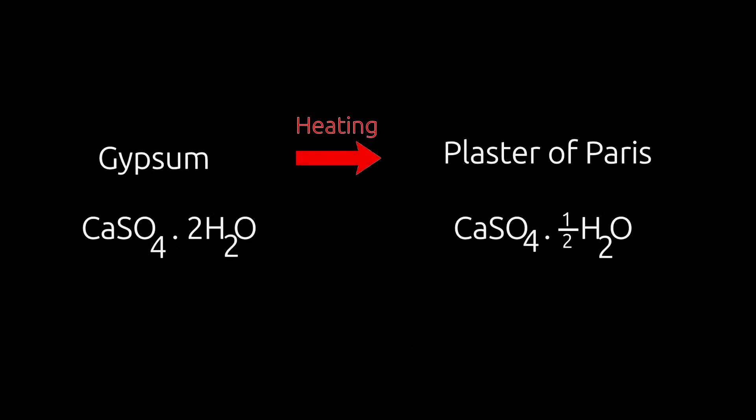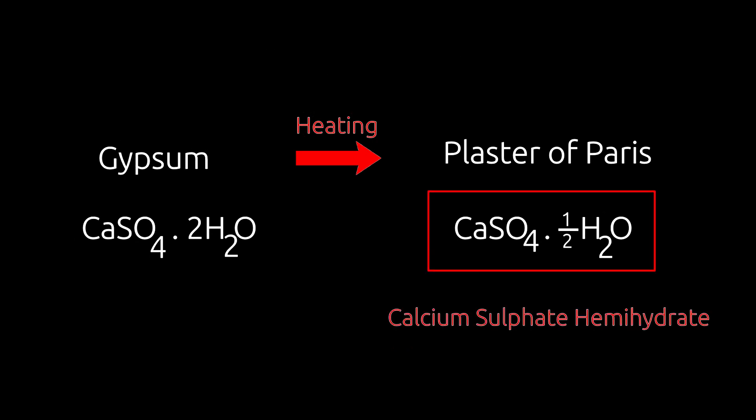Plaster of Paris is obtained by heating gypsum and removing some amount of water from it. Its chemical name is calcium sulphate dihydrate.